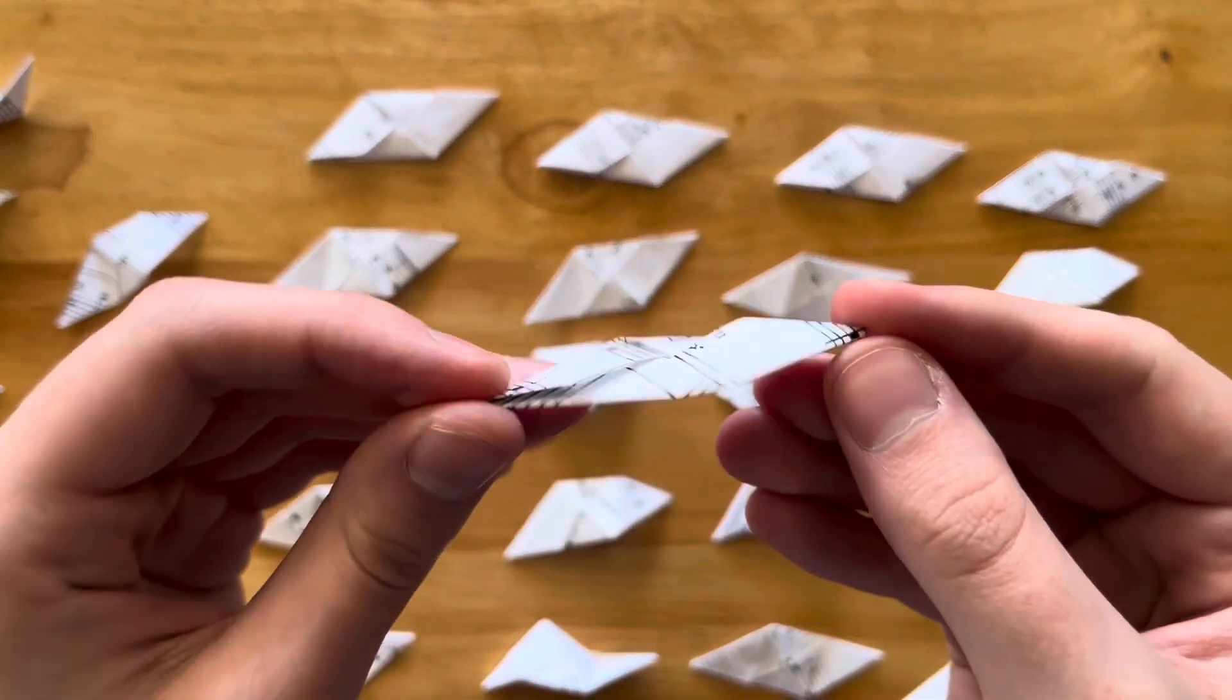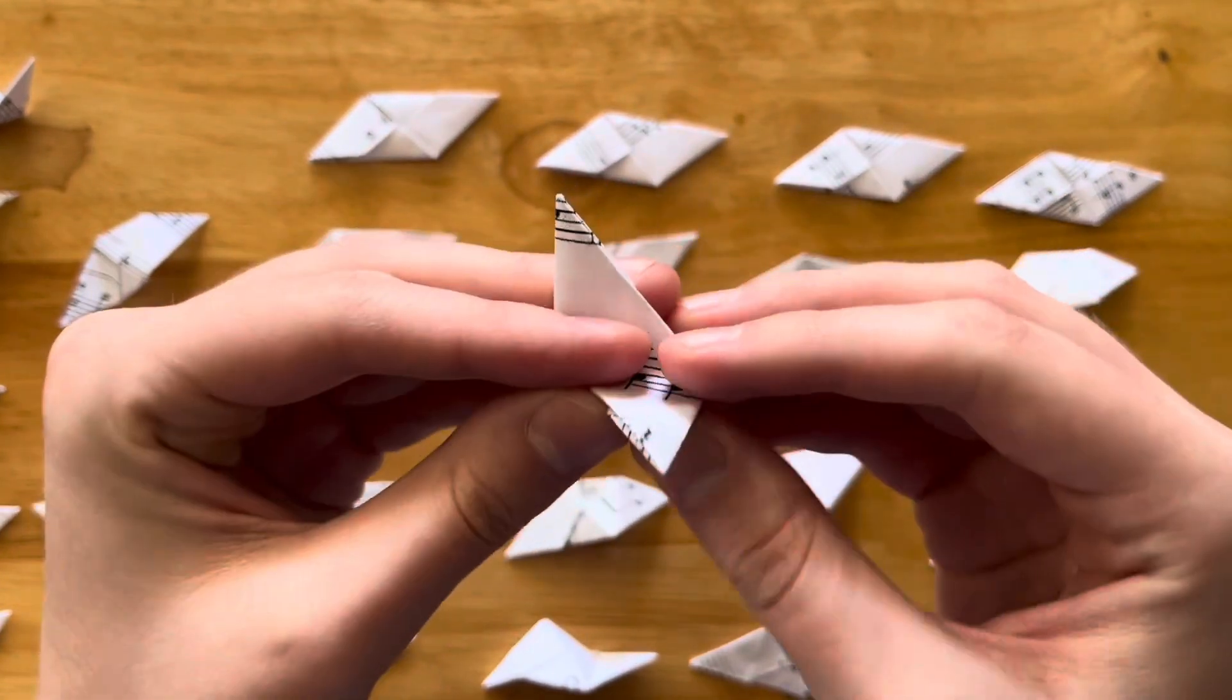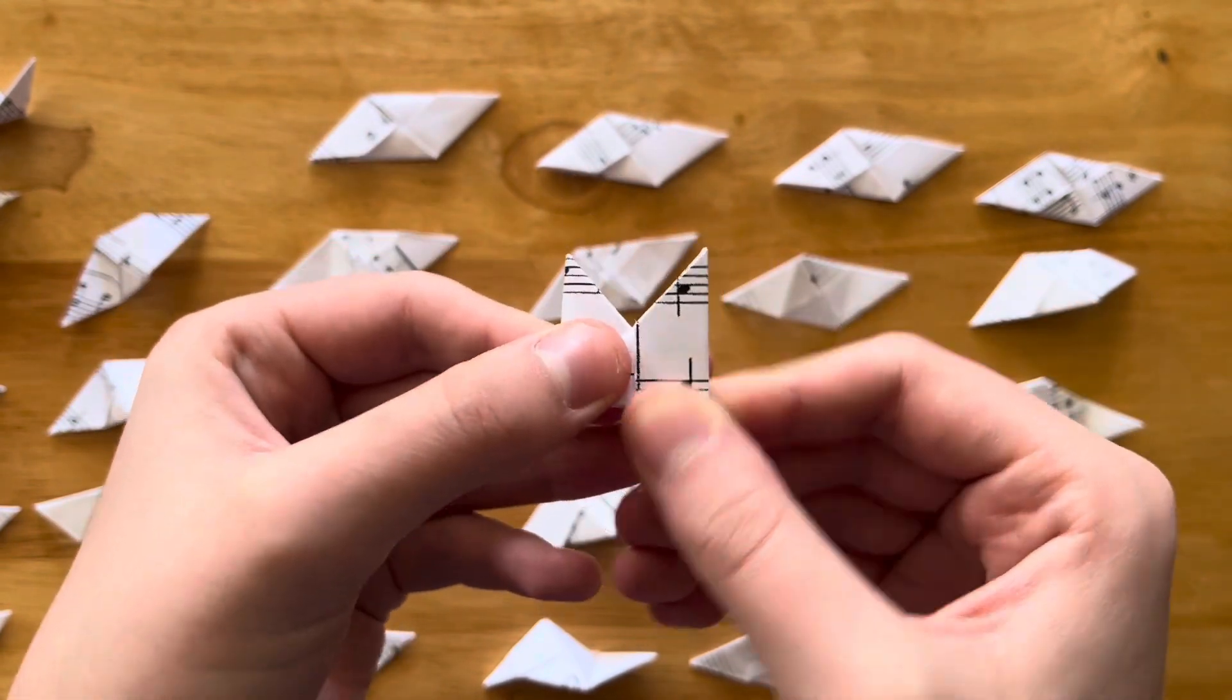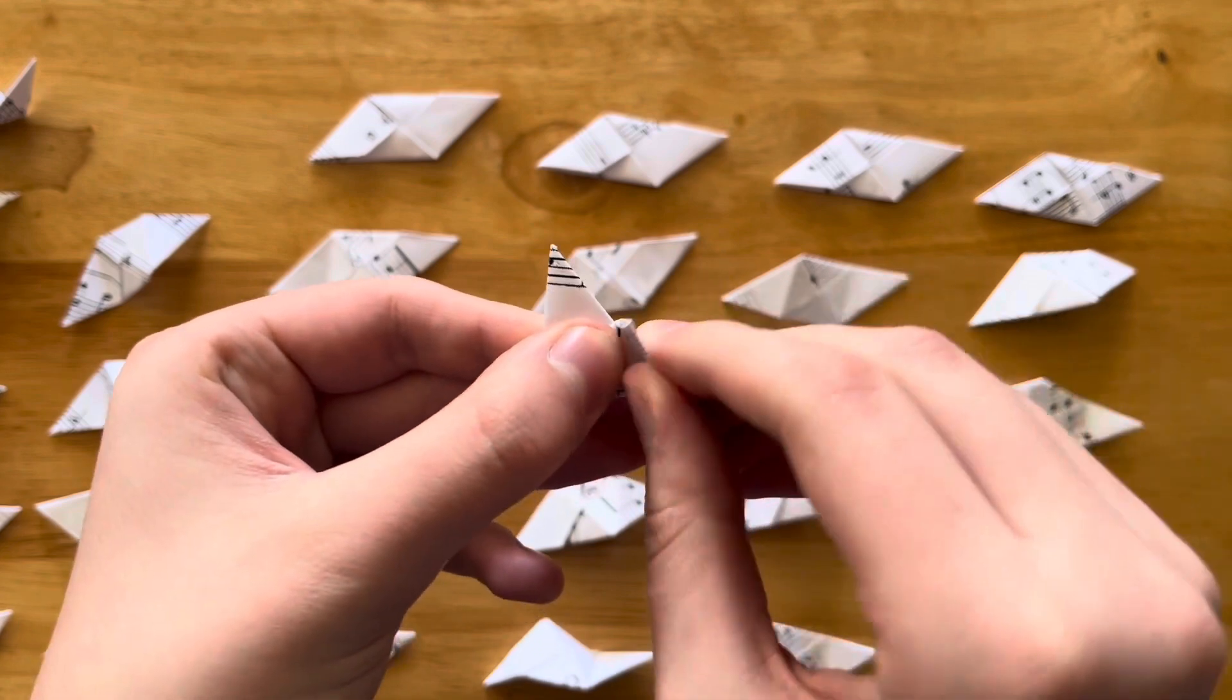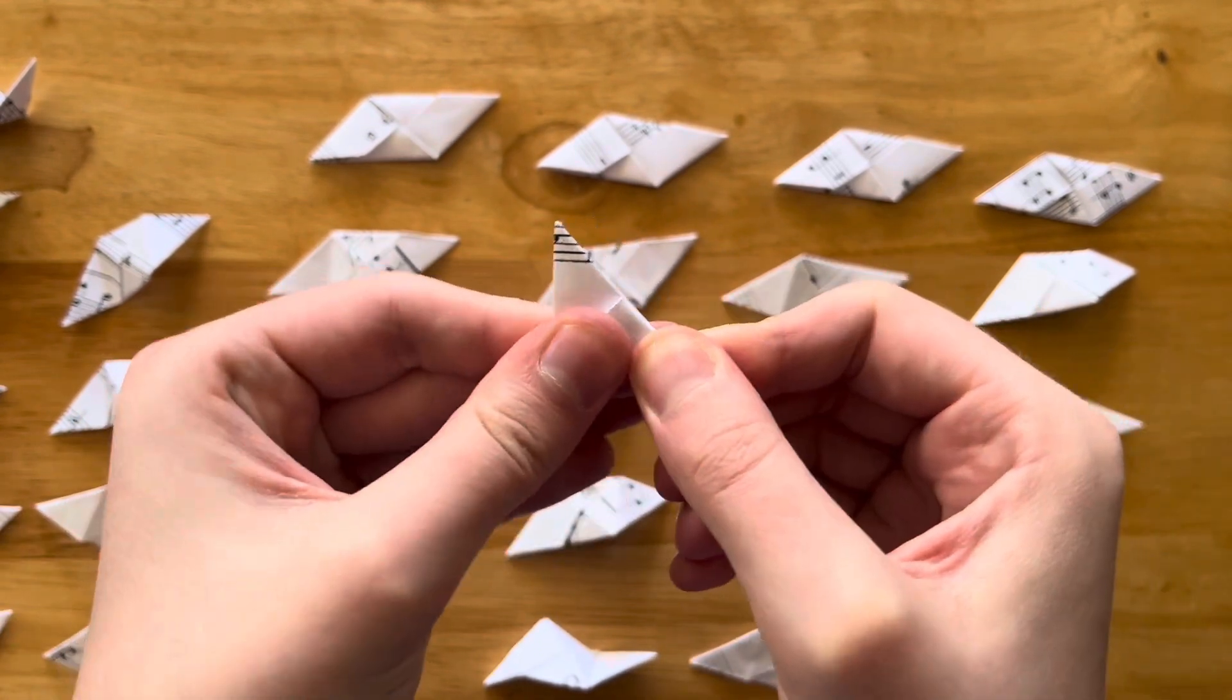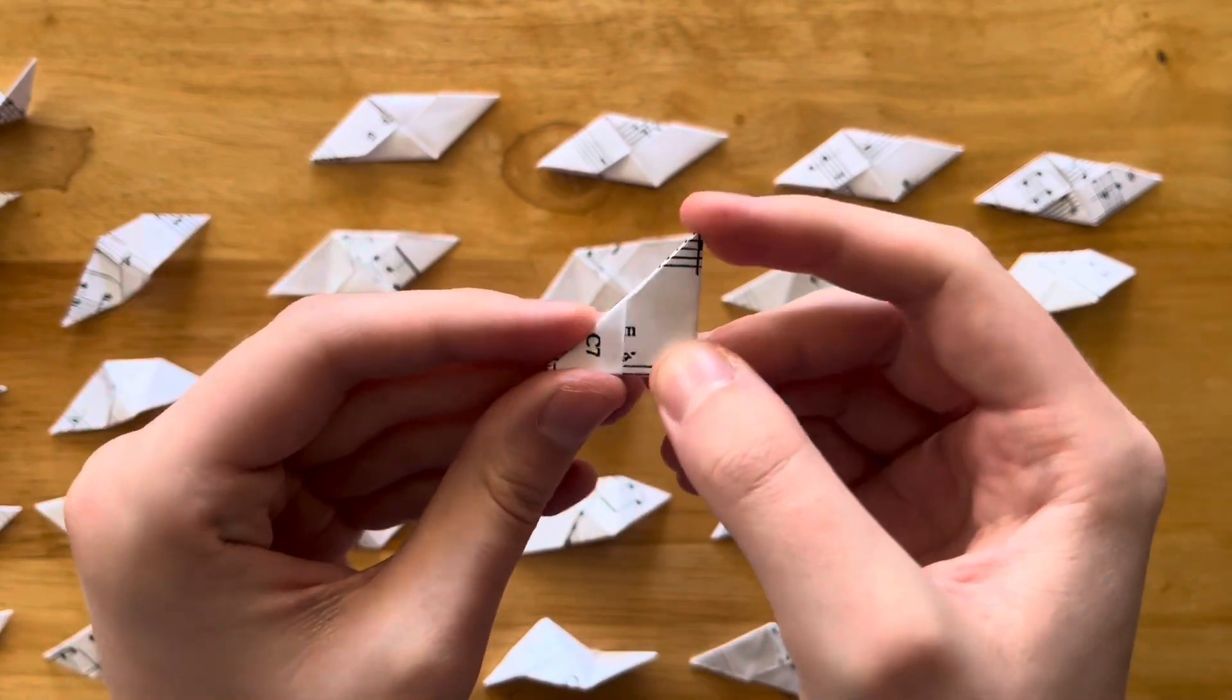So again, you're going to flip your unit onto the flat side and you're going to fold it in half so that it looks like little fox ears like that. And you're going to bring the front ear down like this.